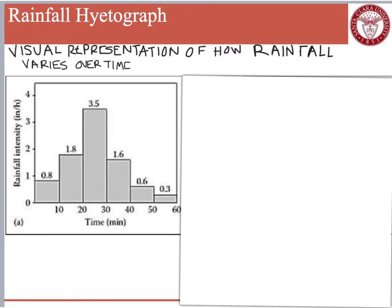As I drew in a previous video, on the x-axis we have time and on the y-axis we have rainfall intensity — in this case, inches per hour. Notice the time increment here is 10 minutes. So the first 10 minutes, it rains 0.8 inches per hour, so you get about 0.13 inches of rain in that first period.